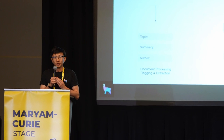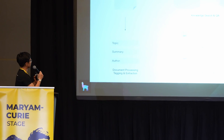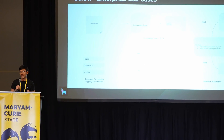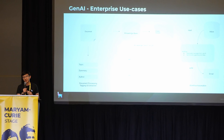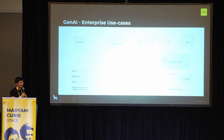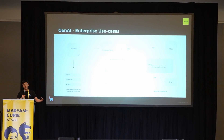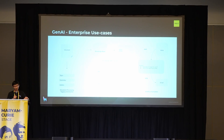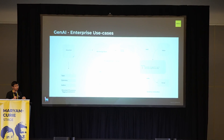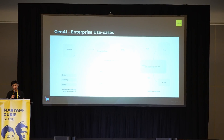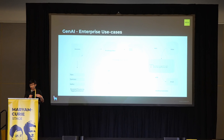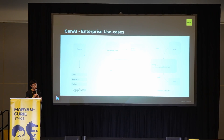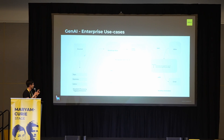At a high level, we'll first talk about what are the enterprise use cases in Gen AI. As the year has gone on — ChatGPT was released around this time last year and OpenAI Dev Day just happened — a lot of enterprises became interested in Gen AI. Some of the core use cases include document processing and extraction, which is the left side.